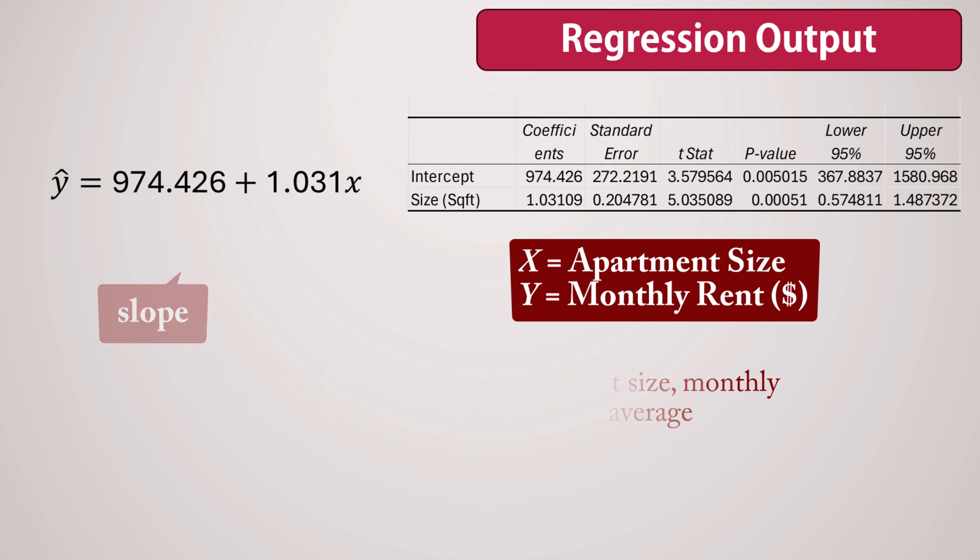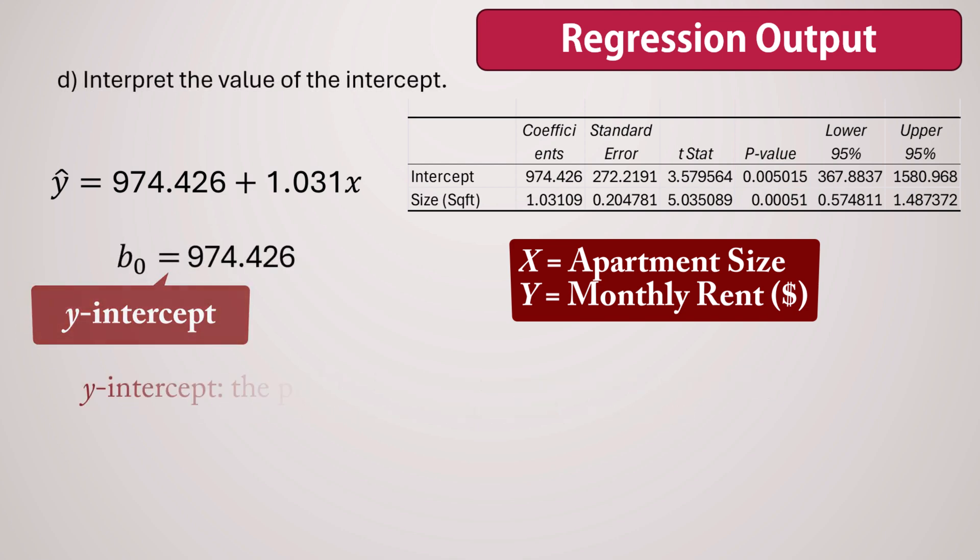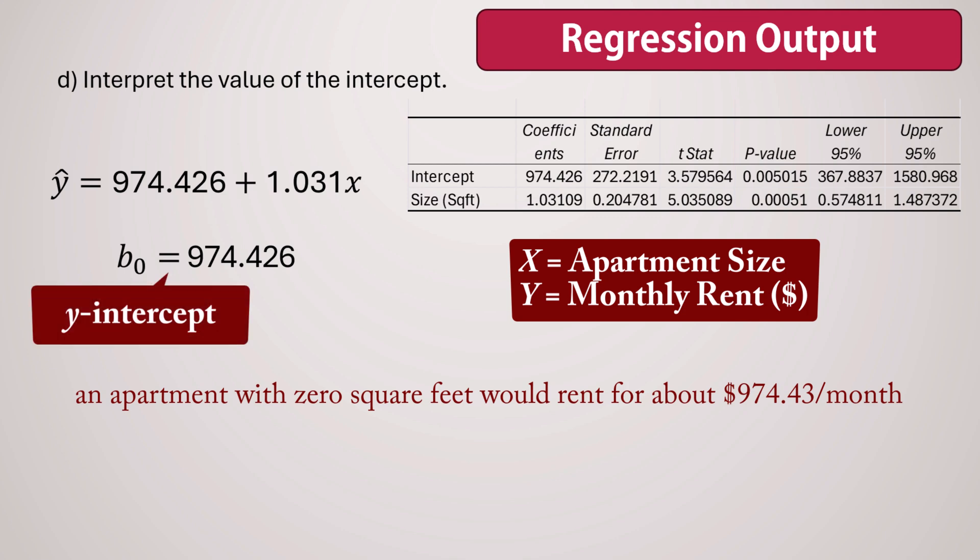Next, we interpret the value of the Y intercept. The Y intercept represents the predicted value of Y, monthly rent, when X, apartment size, is 0. In this context, the intercept suggests that an apartment with 0 square feet would rent for about $974.43 per month.